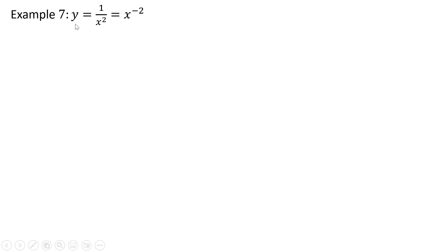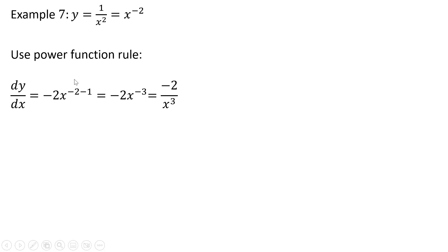Example 7 shows us that sometimes we can rewrite a function to avoid using the quotient rule — sometimes it's just simpler to do it this way. Using the same example as number 6, I'm going to bring the x squared term up into the numerator and then use the power function rule. We bring the exponent down in front: minus 2 comes down, and we subtract 1 from the exponent. We get this result, and then we can move x to the minus third power back into the denominator, and we get the same answer as in Example 6. Instead of using the quotient rule, we just rewrite the function to employ the power function rule.